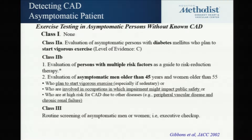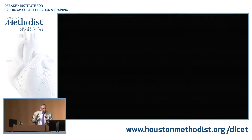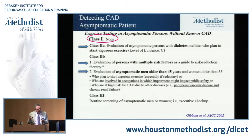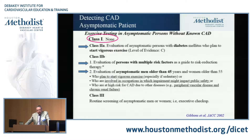So what do the guidelines say in that kind of patient? There's no class one indication — they're all twos or threes. Class 2A: asymptomatic patients with diabetes. Class 2B: patient with multiple risk factors as a guide to risk reduction therapy. Asymptomatic older men who is either going to start a very vigorous exercise program or are involved in very high-risk occupations — pilots being the frequent example. Routine executive checkup: not indicated. Executives may pay cash for it, but let me show you why perhaps that's not such a great idea.